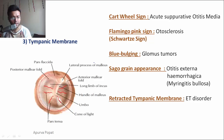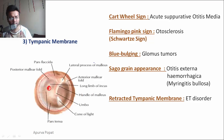A blue and bulging tympanic membrane is seen in glomus tumors — which are of two types: glomus tympanicum and glomus jugulare. A sago-green appearance — vesicles filled with serosanguinous and blood-filled fluid — is seen in otitis externa hemorrhagica, caused by Mycoplasma, also called myringitis bullosa.